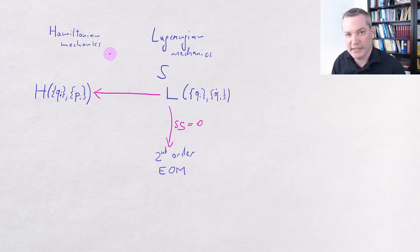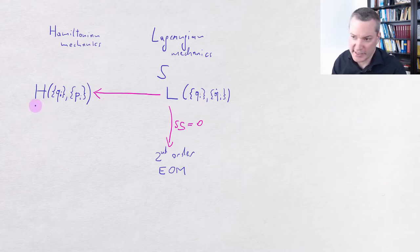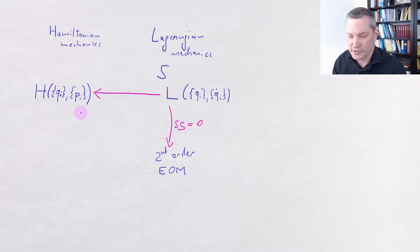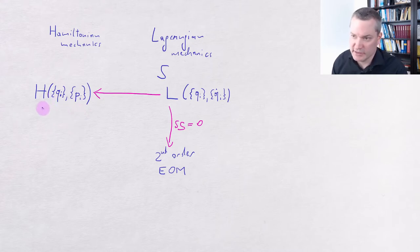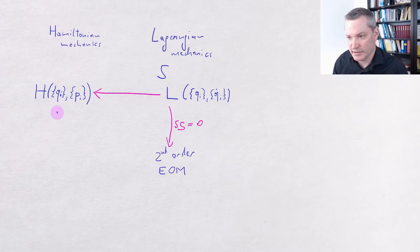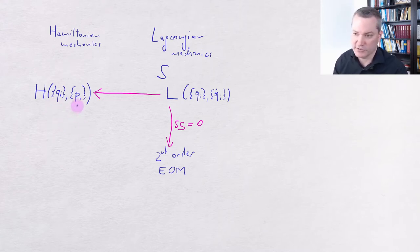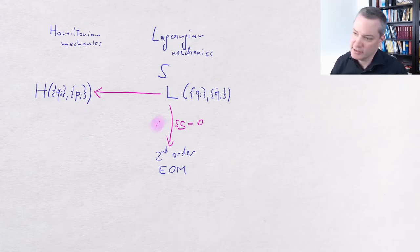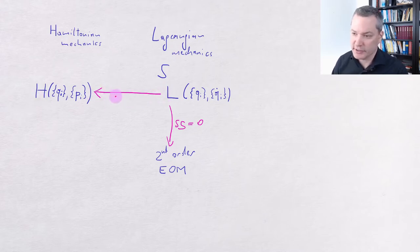We may regard this as a hint that there should be a formalism in which we have twice as many independent variables as we have coordinates q. And indeed such a formalism exists. It is called Hamiltonian mechanics and its central object is the Hamiltonian function H, which is a function of the coordinates q and their conjugate momenta p. In the Hamiltonian formalism the coordinates and the momenta are considered independent variables which can be transformed independently from each other. Mathematically, we get from the Lagrangian to the Hamiltonian function by doing a Legendre transform.